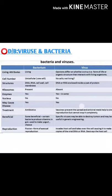Reproduction: Bacteria reproduce by asexual reproduction. Viruses invade the host cell and take over the cell, causing it to make copies of the viral DNA or RNA.